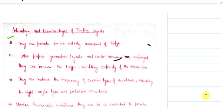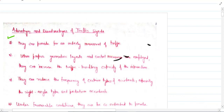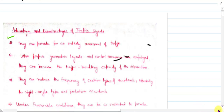Hello viewers, welcome to this video lecture. In this video lecture we are going to discuss the advantages and disadvantages of traffic signals. We start with the advantages of traffic signals. The first point is that they can provide an orderly movement of traffic, and we will see this point with a diagram.